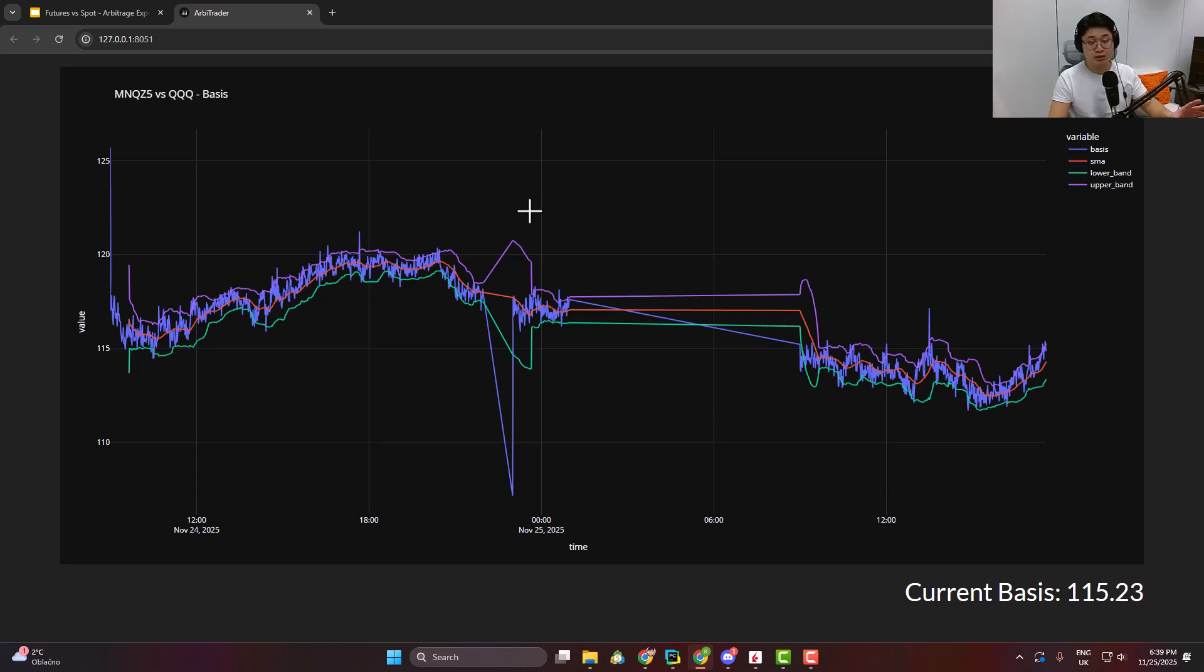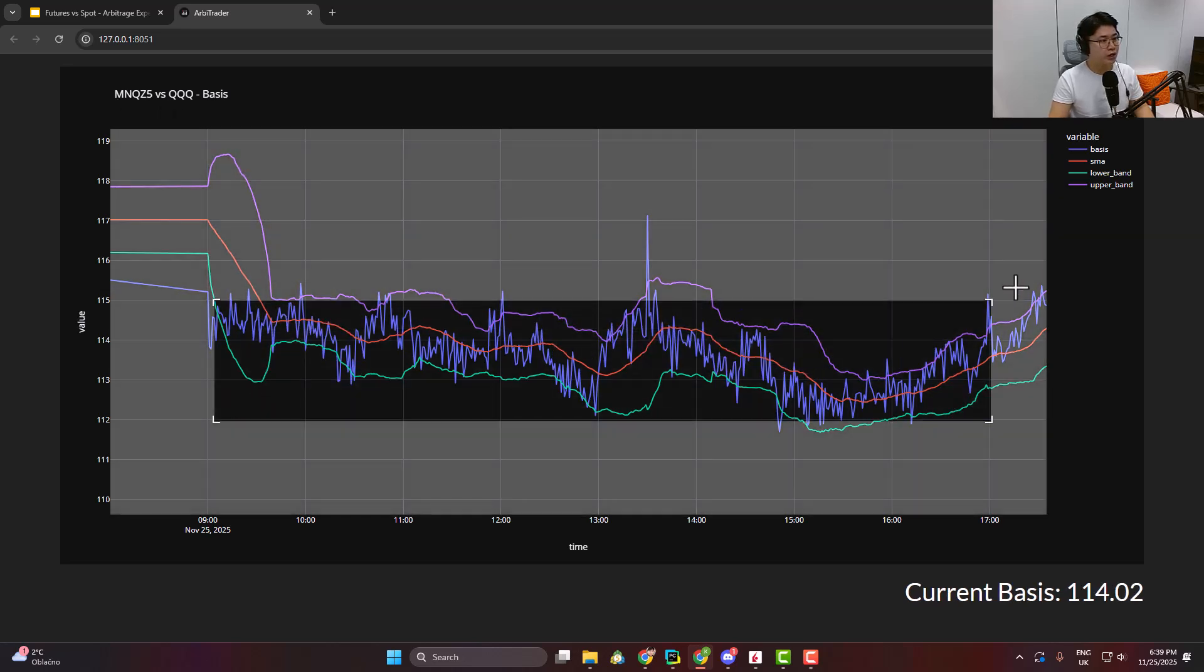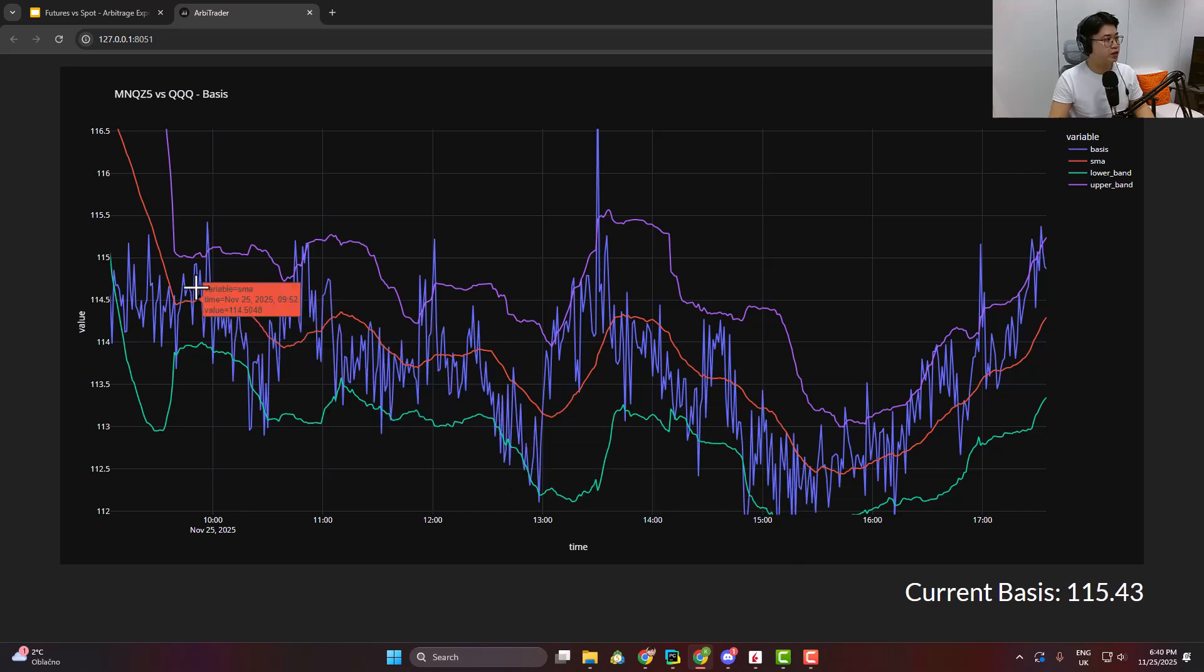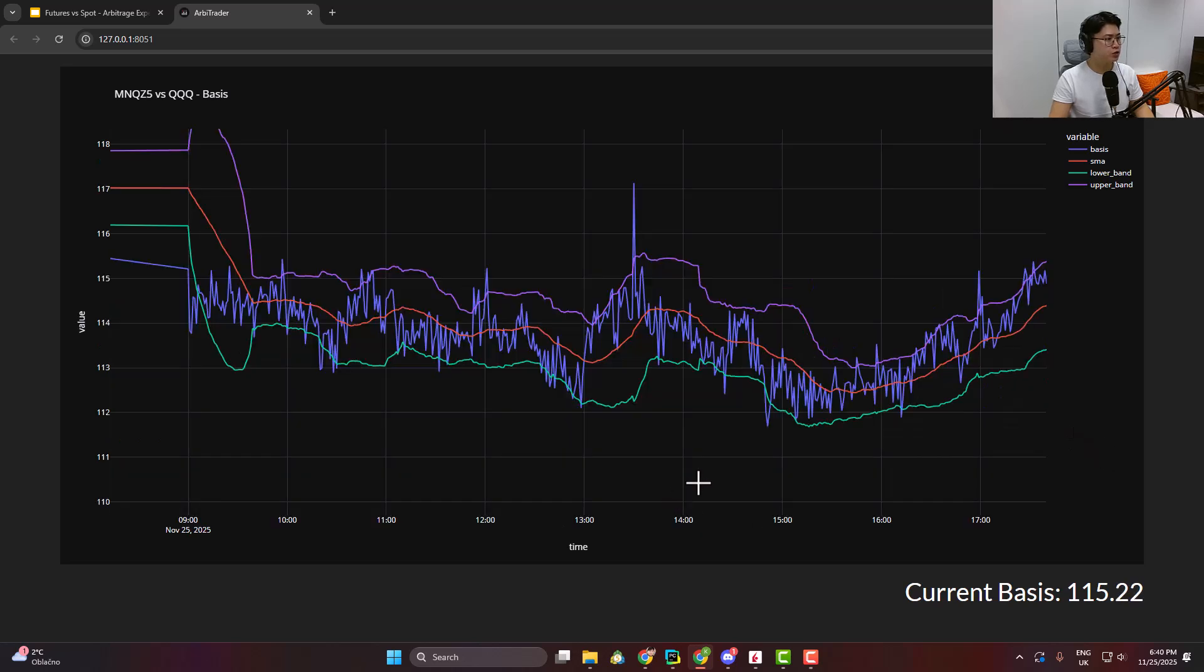On this chart, you see the basis data for today, which is MNQZ5 versus QQQ. Today the basis range is between 115 and 112. What I'm trying to do is find low basis values so we can buy the basis, and when they're high, we can sell it. Right now basis is around 115, which I would consider high. By selling this basis, which means selling the futures and buying the spot, we're then speculating on this basis to drop.